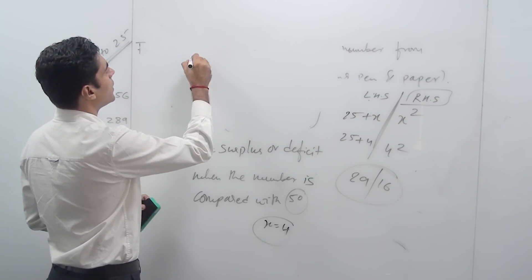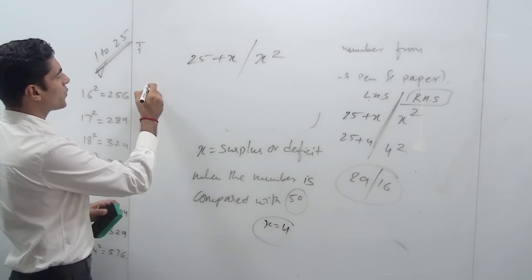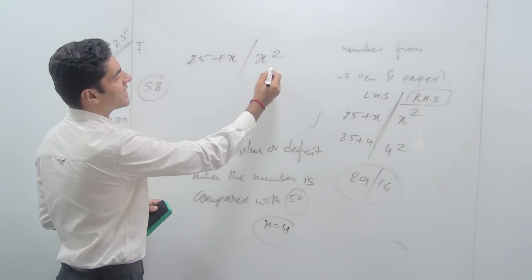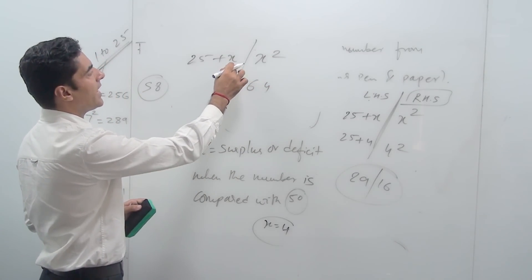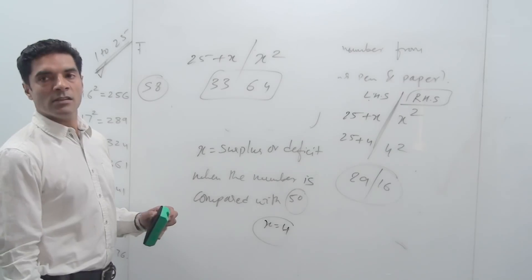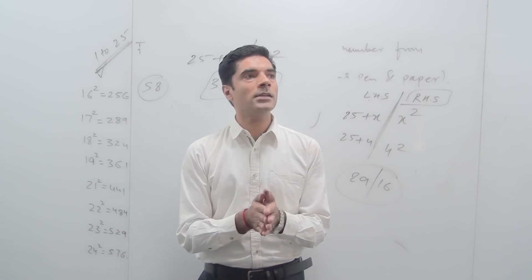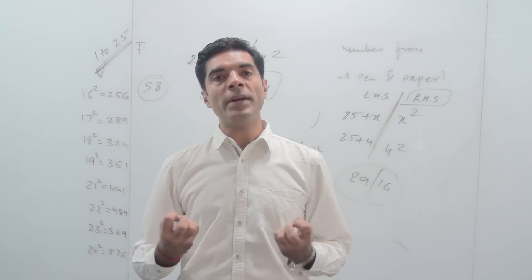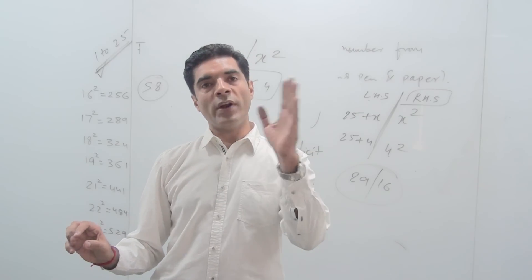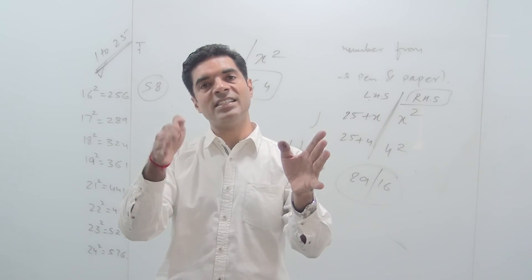The formula is 25 + x slash x². Let's say I wanted to find the square of 58. Compare 58 with 50: 8 more, so x = 8. 8² = 64. 25 + 8 = 33. So the answer is 3364. Let's say my number is 62. Compare 62 with 50: surplus of 12. 12² = 144; retain 44, carry forward 1. 25 + 12 = 37, plus 1 carry forward = 38. So the answer is 3844.